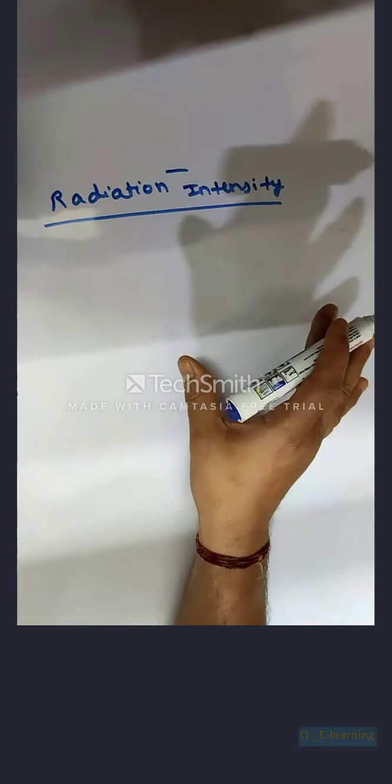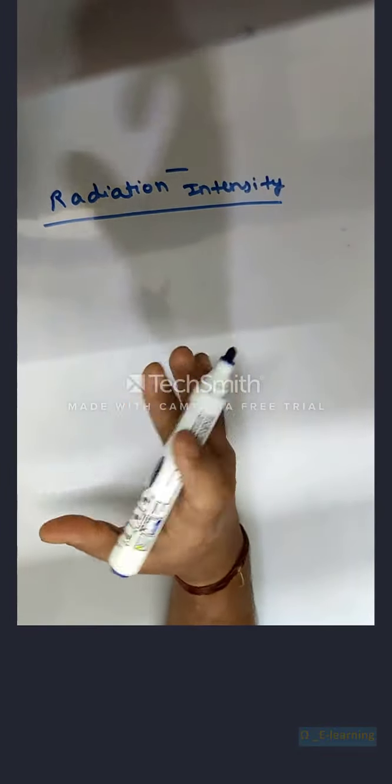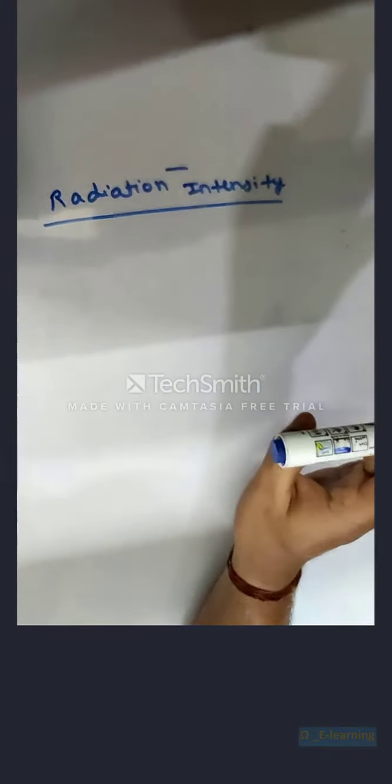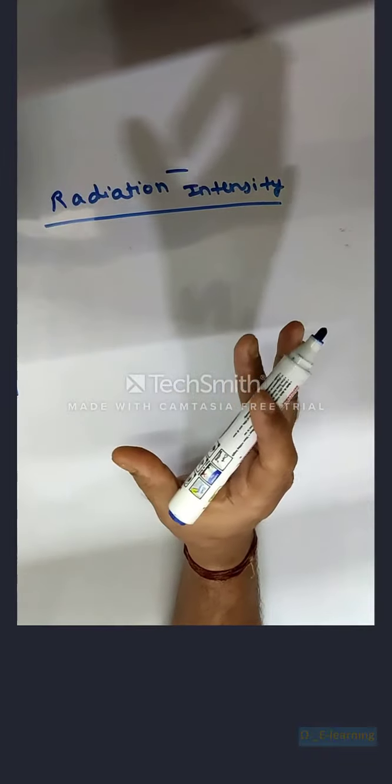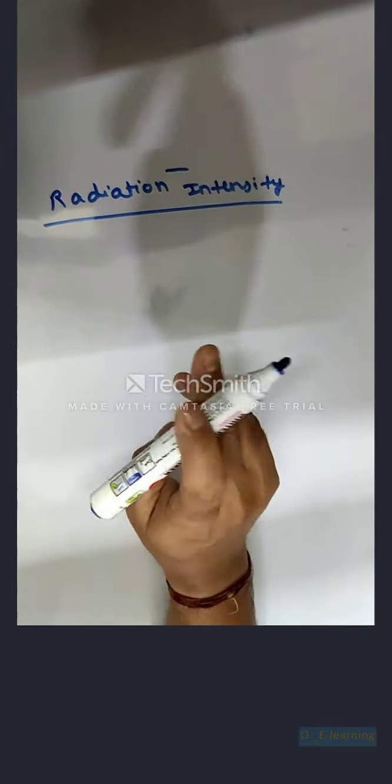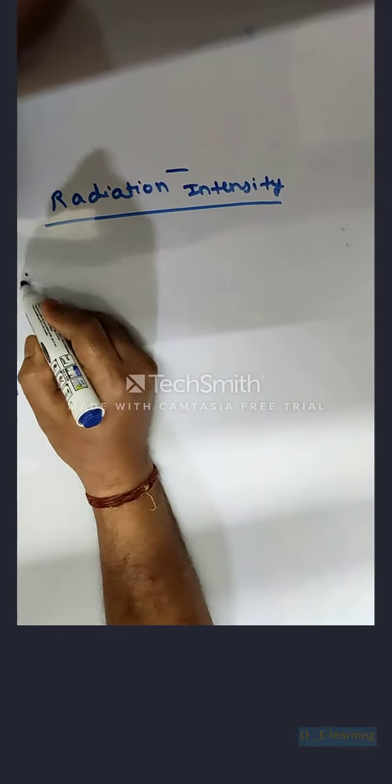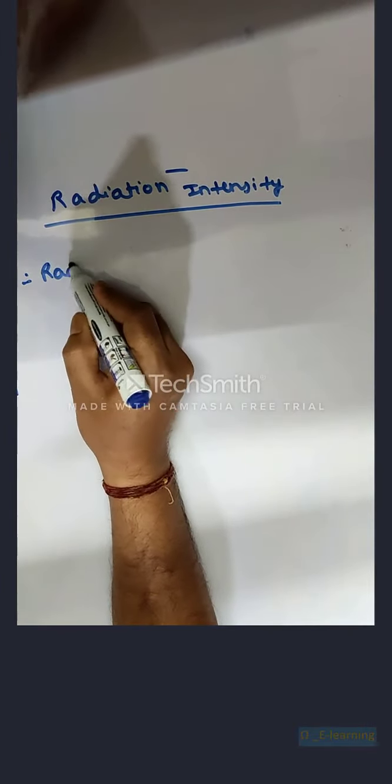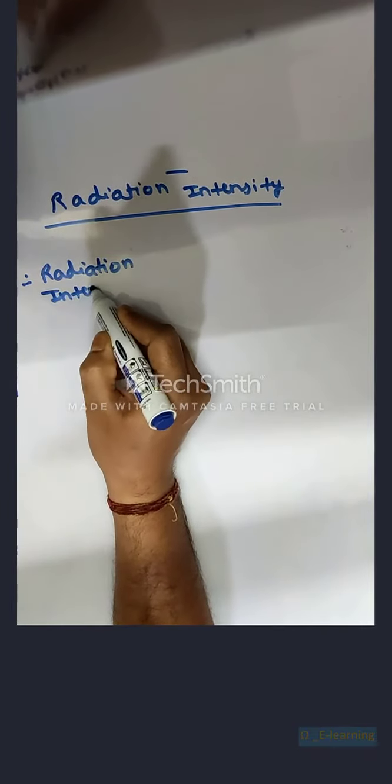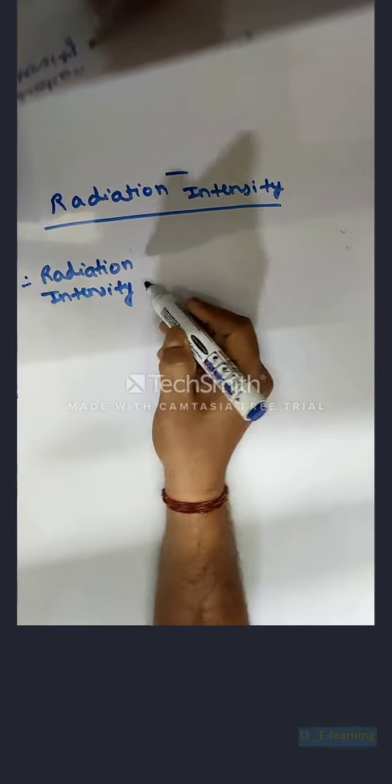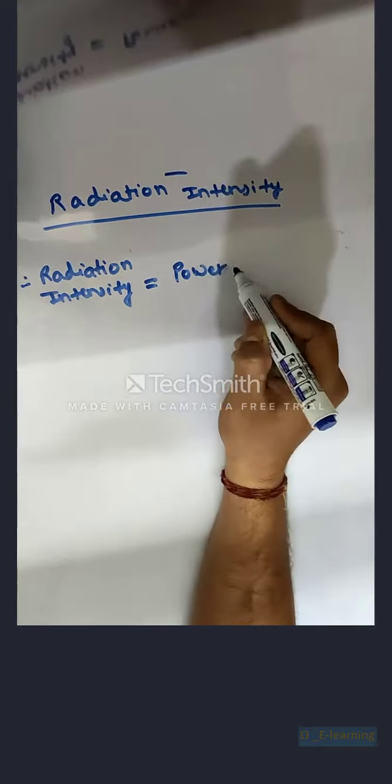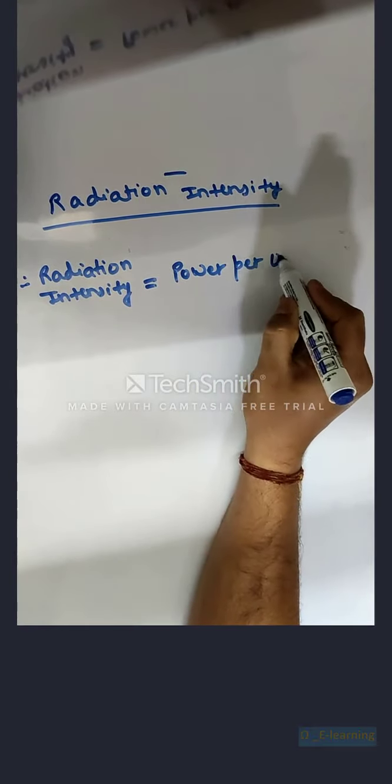EM power decreases as we go away from the antenna, and E field falls by R square. So power density, that is power per unit area, decreases as we go away from antenna and is distance dependent. The advantage of radiation intensity is that it is distance independent, which is given by power per solid angle. And therefore radiation intensity is also written as u theta phi is equal to power per unit solid angle.